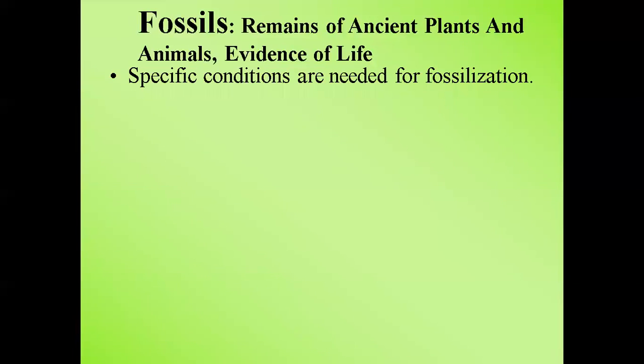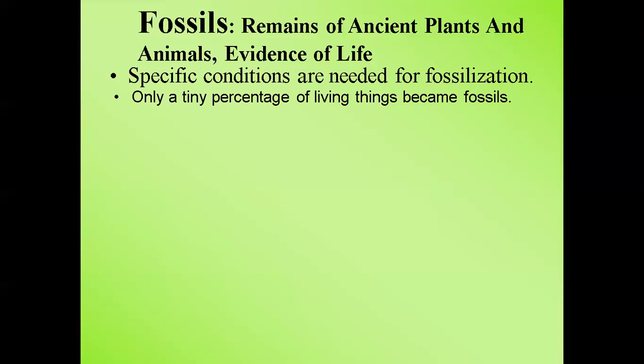How did scientists trace this history? They used fossils — the remains of ancient plants and animals — as evidence of life, to trace what was happening in the past or the beginning. Specific conditions are needed for fossilization. Only a tiny percentage of living things become fossils, and it depends on whether they are buried in metamorphic rocks, which form over millions of years under pressure.